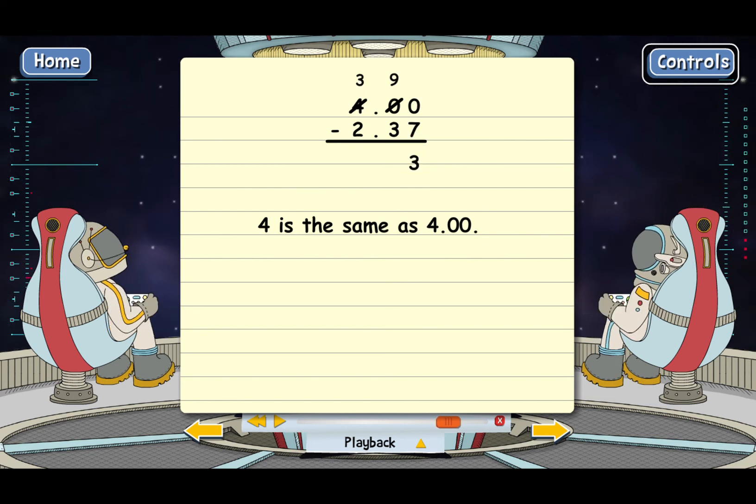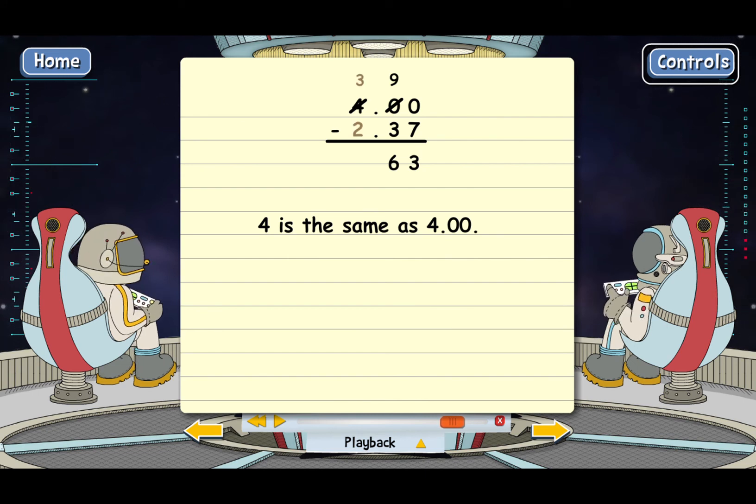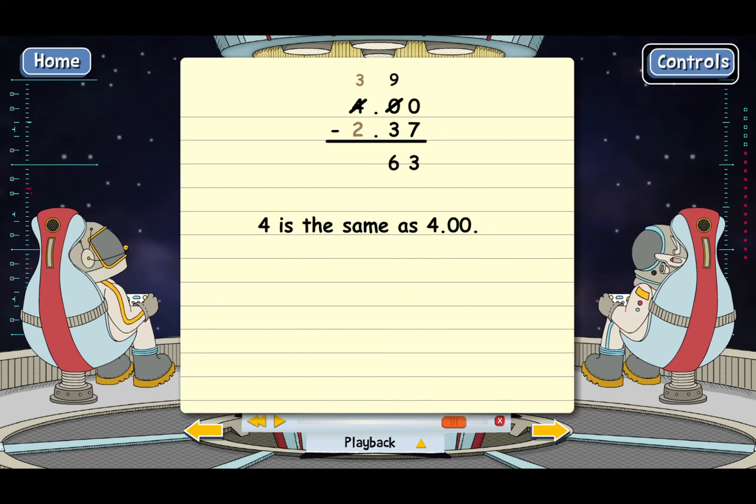Now subtract in the second column. What's 9 minus 3? That's right. Next, we subtract in the third column. What's 3 minus 2? You got it. So we end up with 163 on bottom.